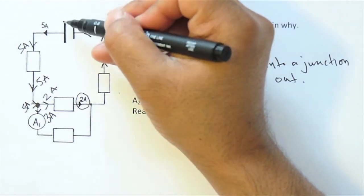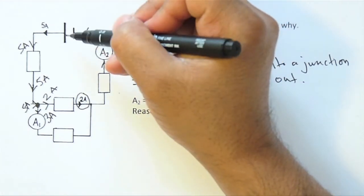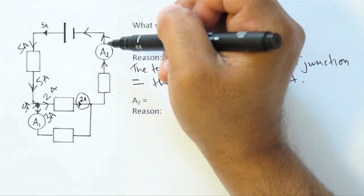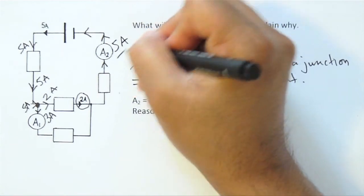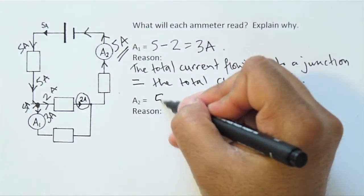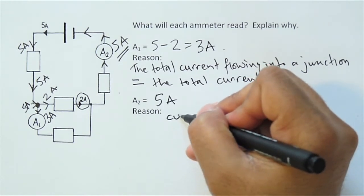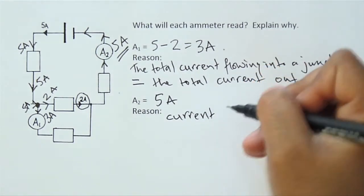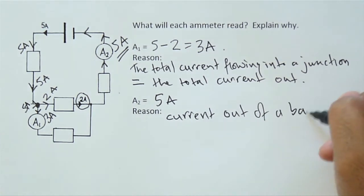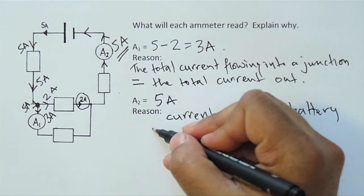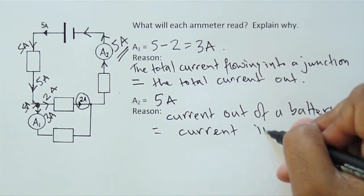Now a battery is a device that pumps charge, it doesn't store it, so we know that the current flowing out of it must be the same as the current flowing into it. So A2 is simply 5 amps. A2 equals 5 amps, and the reason is current out of a battery is equal to the current in.